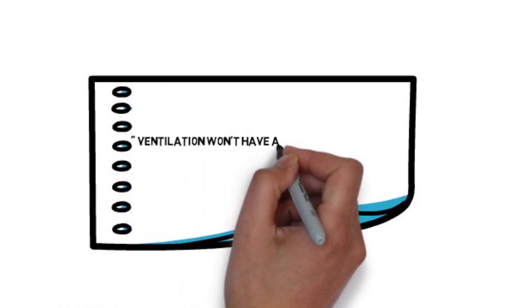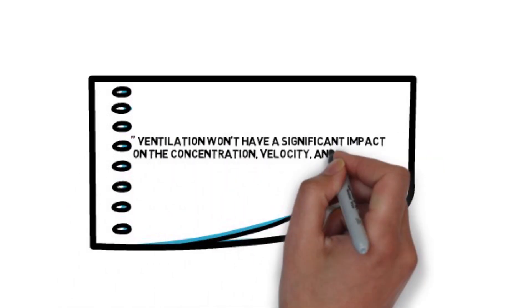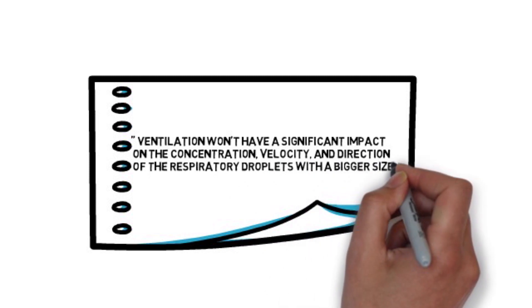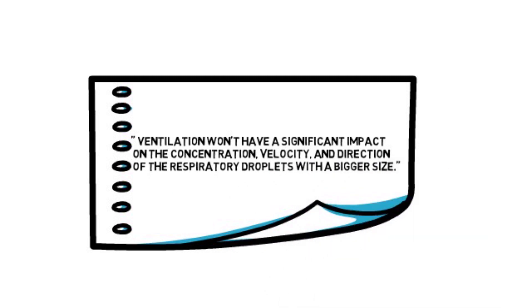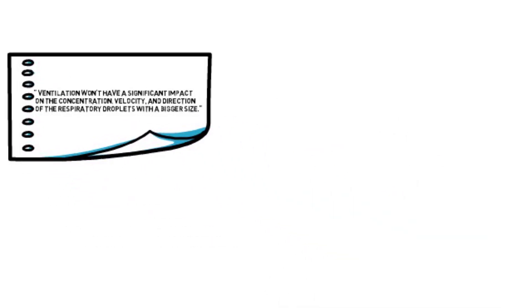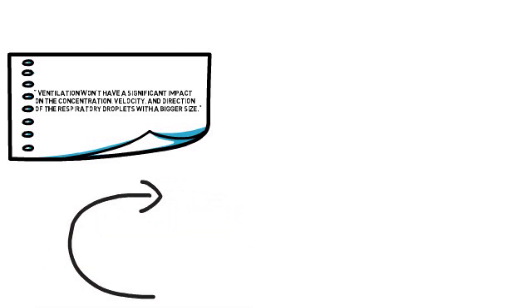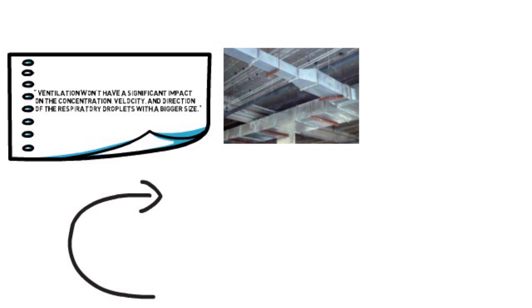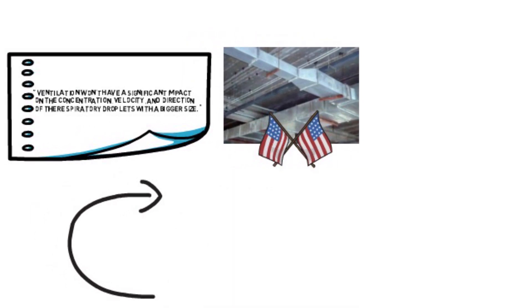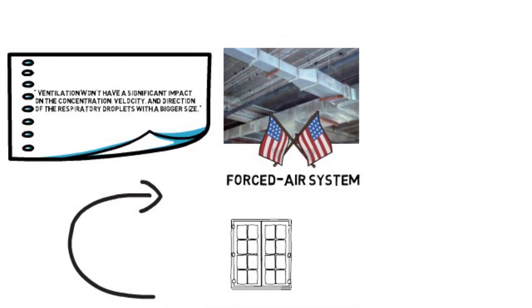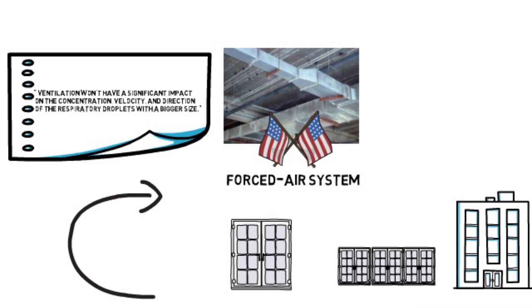Based on this ASHRAE document, ventilation won't have a significant impact on the concentration, velocity, and direction of the respiratory droplets with a bigger size. However, aerosols can travel a relatively long distance through air ducts in the buildings. Because most HVAC systems in the U.S. are forced air systems, the virus could be transmitted through HVAC ducts to the same floor or even the entire building.